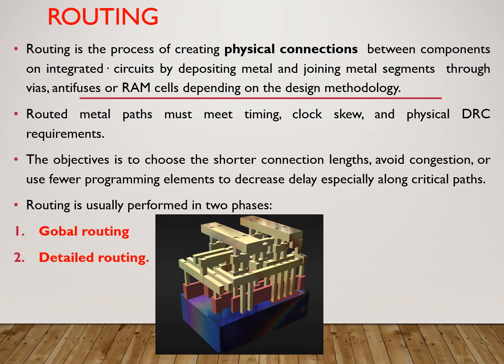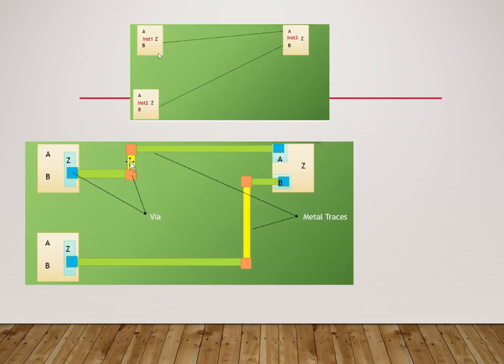Next we are going to see global routing. First, we have to know how connections are made. For example, if you have three instances and you want to make a connection between them, you have to use vertical tracks as well as horizontal tracks. These vertical and horizontal tracks are present in different layers.